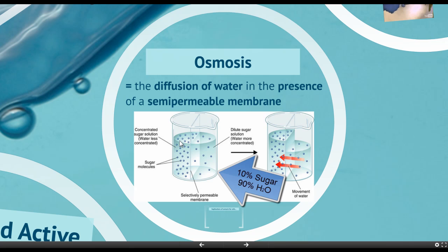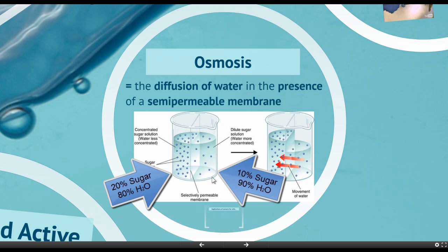On the other side, if it's 20% sugar, it must be 80% water. So we can figure out the direction of diffusion: water moves from high concentration to low concentration. We have 90% water on one side and 80% on the other, so the water is going to flow from the right to the left, and the water level is actually going to move up.